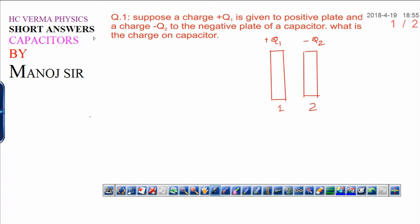This is the first question from this chapter. Suppose a charge positive Q1 is given to the positive plate and a charge negative Q2 to the negative plate of a capacitor. Let this be the positive plate and this be the negative plate.